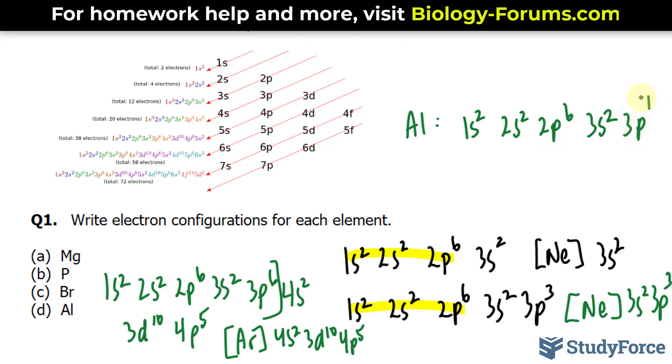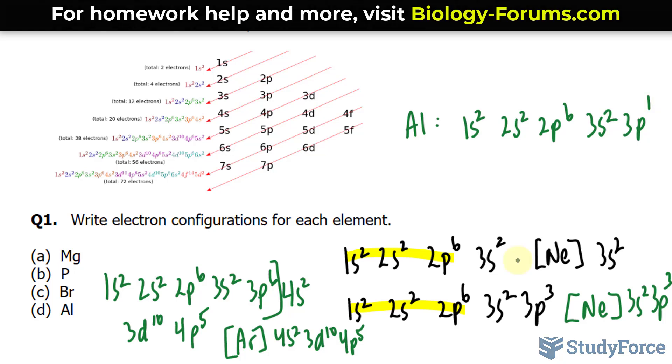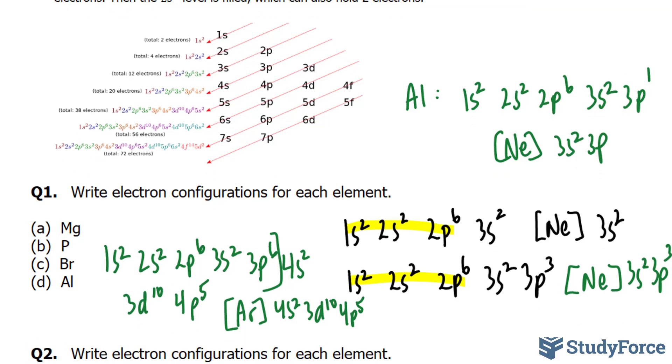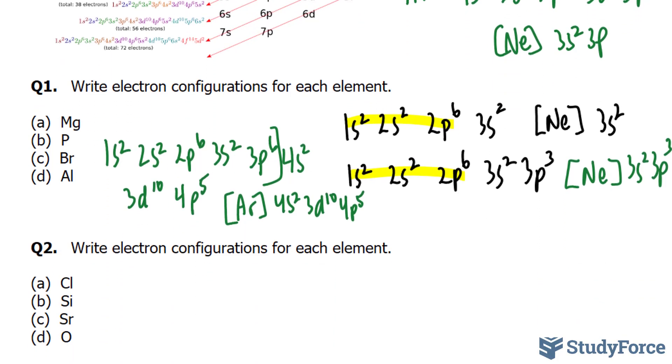And of course, we can shorten this by writing out neon 3s², 3p. Those are the answers to question number 1. If you want to see the answers to question number 2, make sure that you watch part 2 of this lesson.